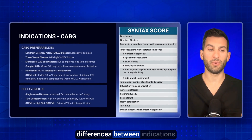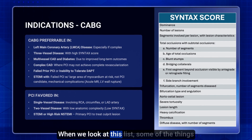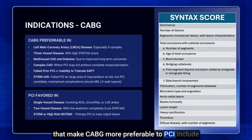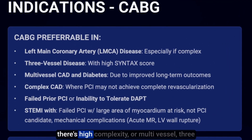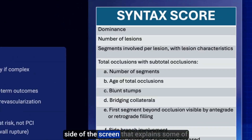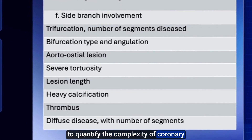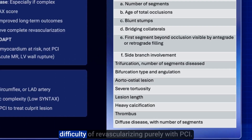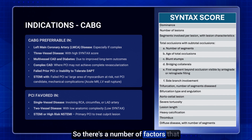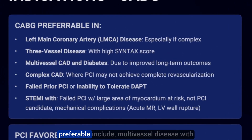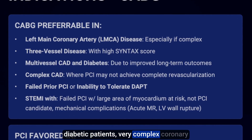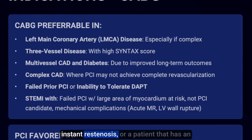It's important to know some of the differences between indications for cabbage surgery versus PCI. Some of the things that make cabbage more preferable to PCI include left main coronary artery disease, especially with high complexity, or multi-vessel or three-vessel disease with a high syntax score — a grading system used to quantify the complexity of coronary artery disease and the difficulty of revascularizing purely with PCI. Other features include multi-vessel disease with diabetic patients, very complex coronary artery disease not amenable to PCI, failed prior PCI such as in-stent restenosis, or an inability to tolerate dual antiplatelet therapy.